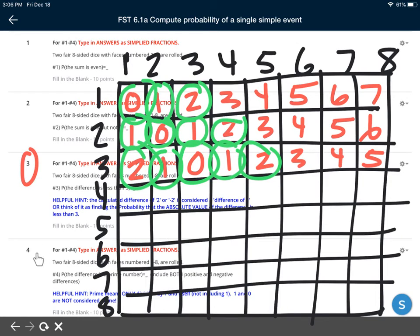Now for number 4, if you were to address this one, the difference is a prime number. So for number 4 you have to remember your prime numbers. Prime numbers are divisible by 1 and themselves, not including 1. So be careful 1 is not prime. The first prime number is 2.